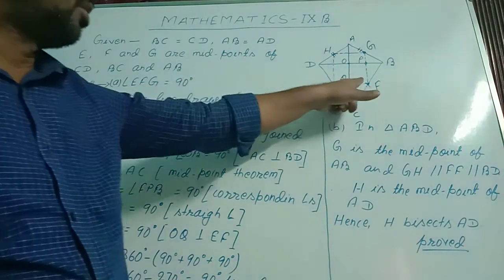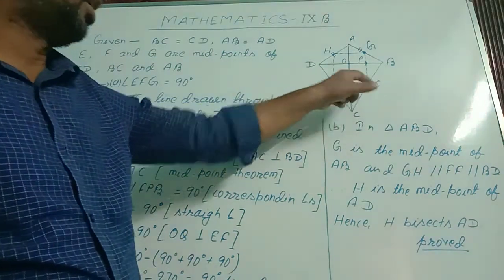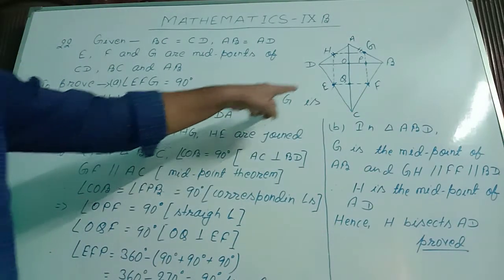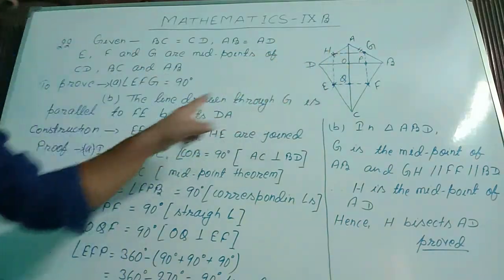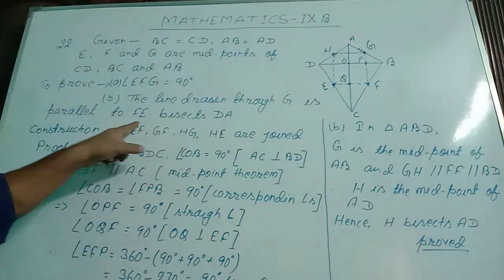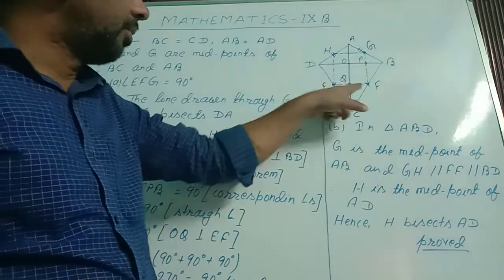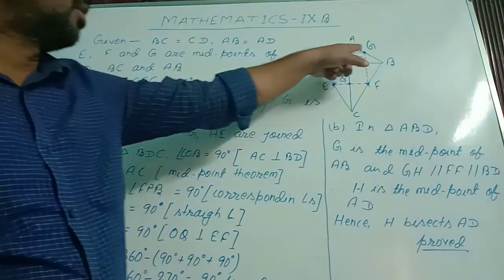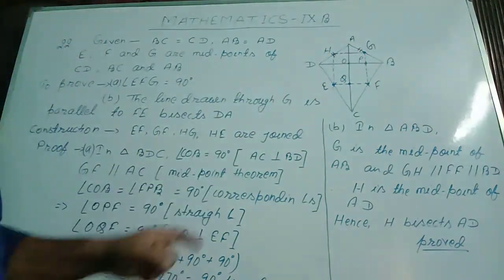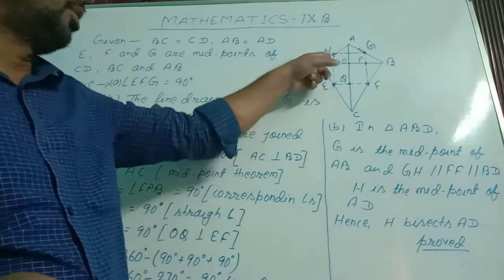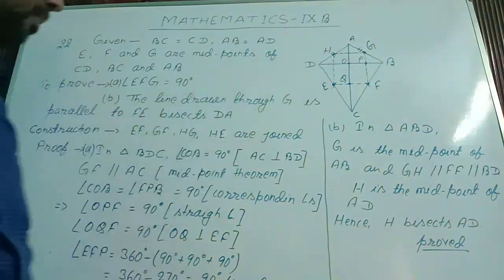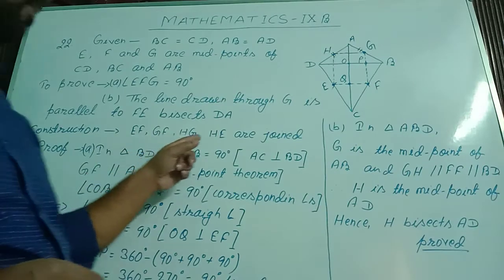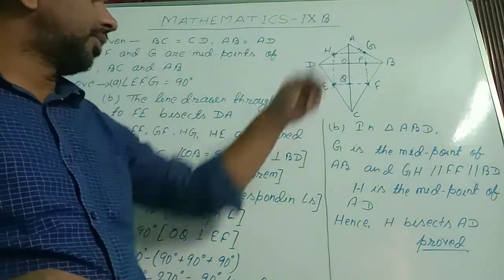To prove part A: angle EFG is 90 degrees. And the line drawn through G parallel to FE bisects DA — meaning we have to prove AH equal to DH, or H is the midpoint of AD. Construction: EF, GF, HG, HE — all these are joined.